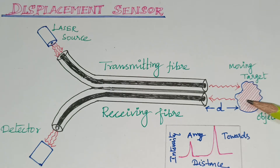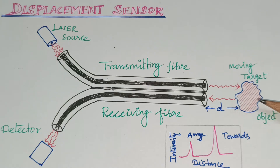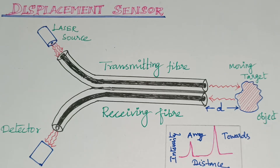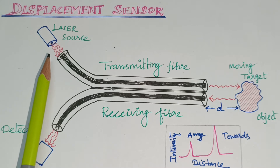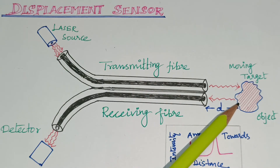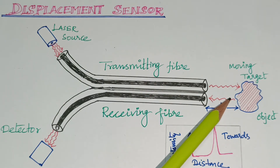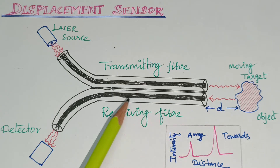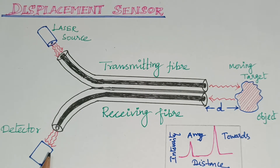The working is as follows: Light from the Laser Source passes through the Transmitted Fiber and falls on the Moving Target. The light is then reflected from the Target, passes through the Receiving Fiber, and is detected by the Detector. Based on the intensity of this reflected light, the distance of the object is determined.